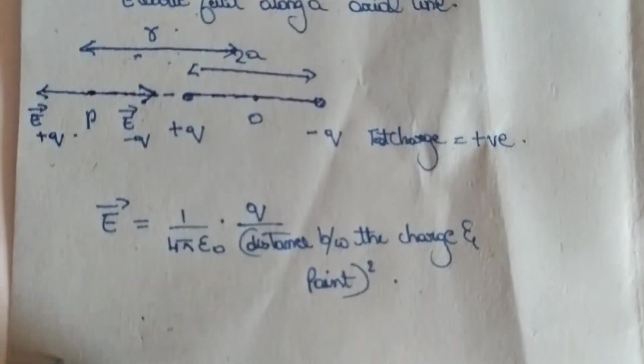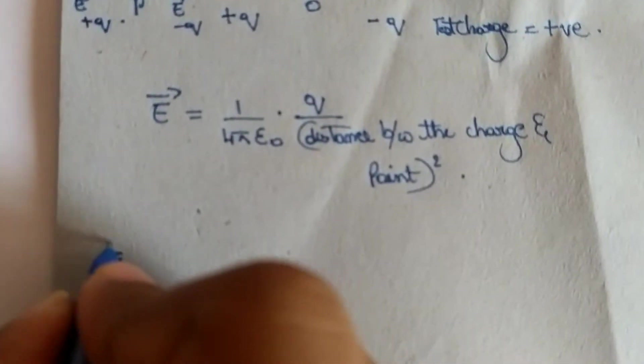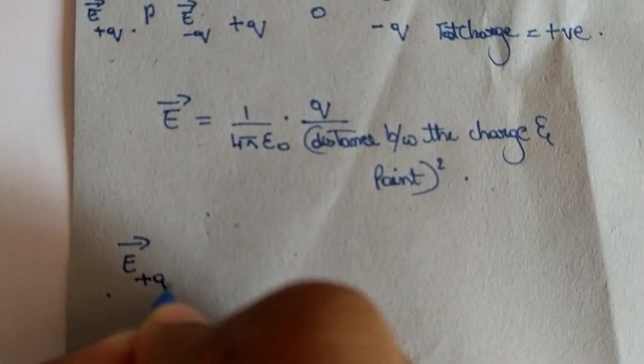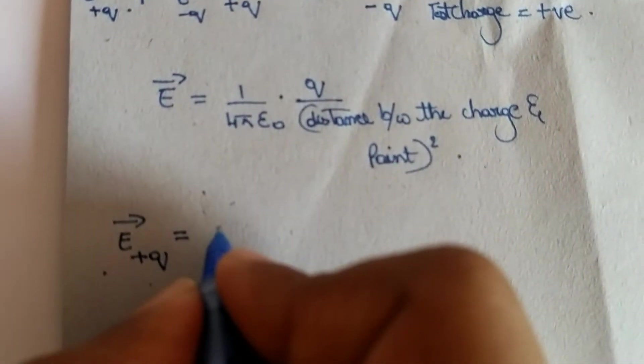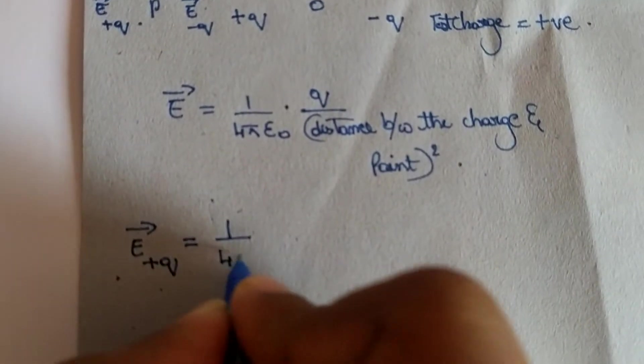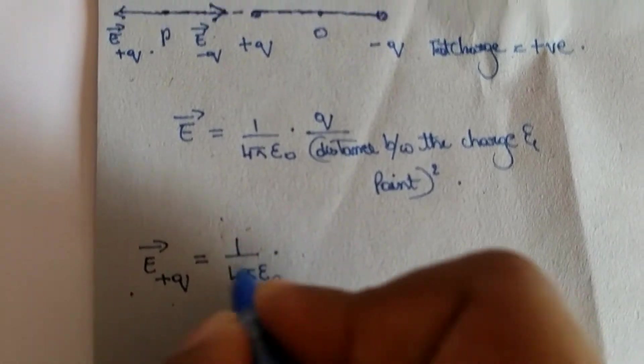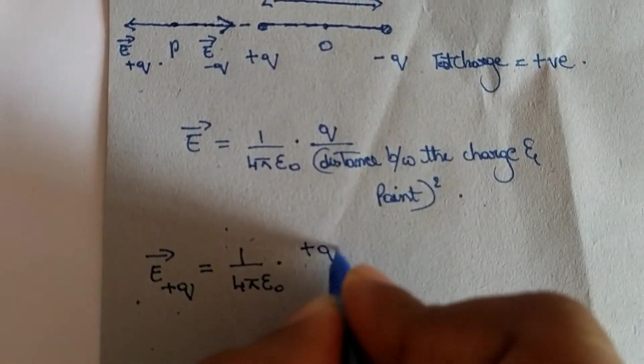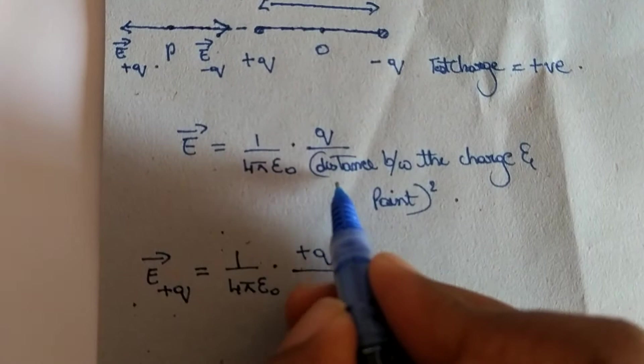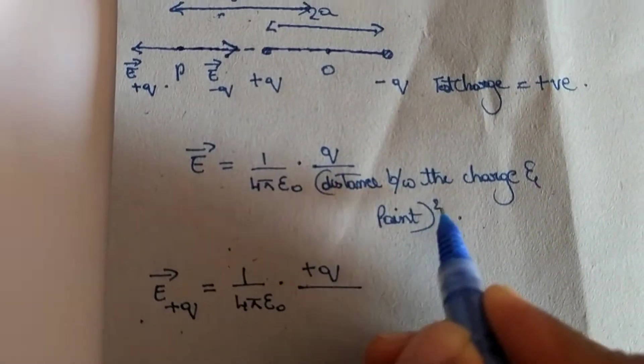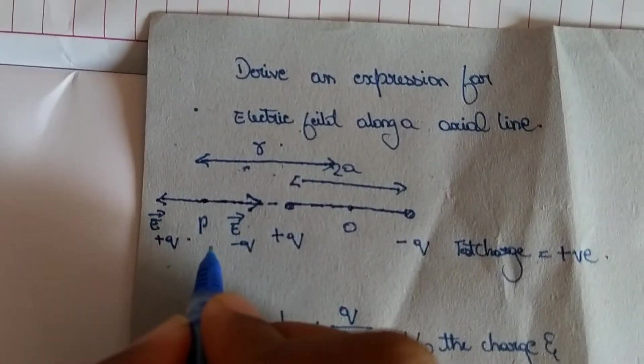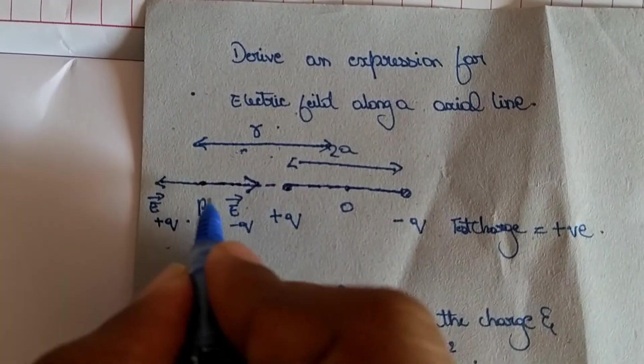Hence, due to the charge plus Q, electric field remains outside, extremely opposite. Let us write an equation. Electric field due to plus Q is given by 1 by 4 pi epsilon not, the charge here is plus Q, and distance between the charge and the point whole square.